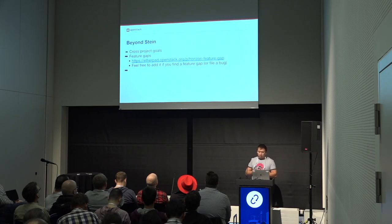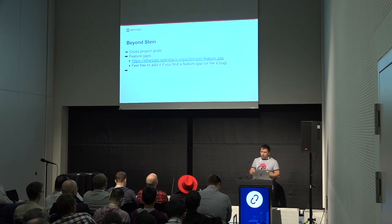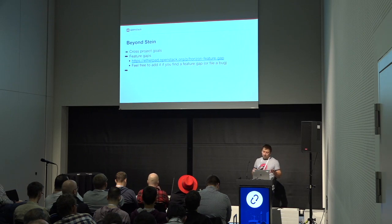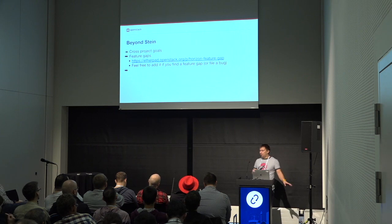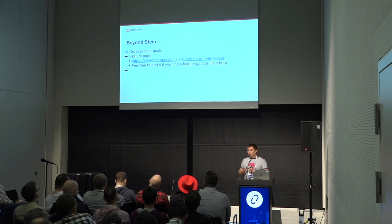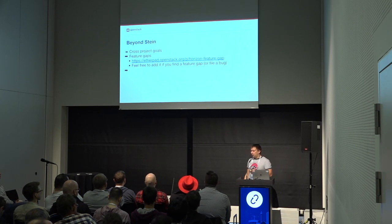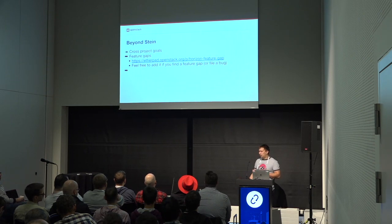We are trying to follow all OpenStack community goals. For the past release these were mostly developer-related goals, like removing the outdated test plugin. For the Stein release, the goal is to test everything on Python 3, which we have already implemented — Horizon fully supports Python 3. This is important for Ubuntu and for the upcoming Red Hat Linux release, which will have only Python 3 by default.